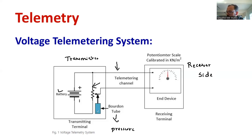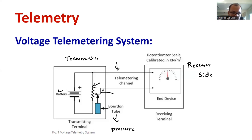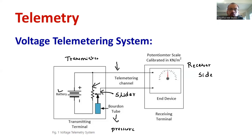How does it work? As we can see, the potential divider works based on the voltage division rule or voltage division formula. With respect to the input of the burden tube, the position of the slider will be changing. This is your slider of the potential divider. As the pressure changes, there is a change in the burden tube, and the burden tube is connected with the slider, so the slider position also changes.